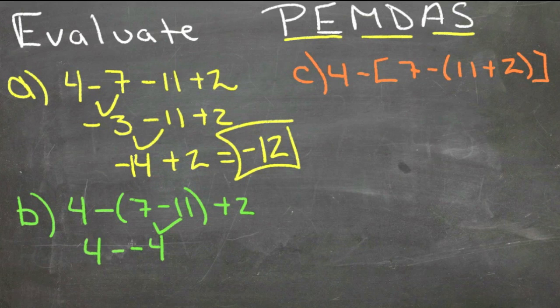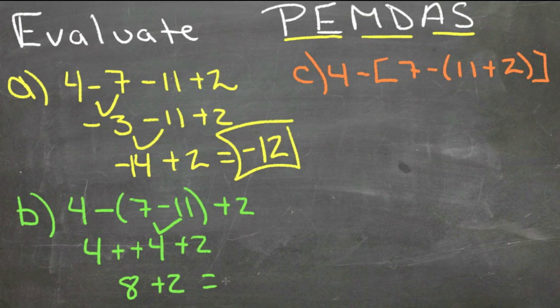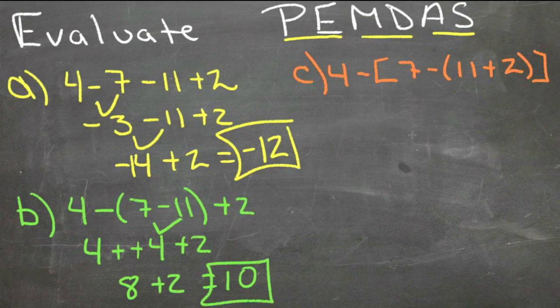So we have 8 plus 2, and 8 plus 2 equals 10. And then in our third example here we have two sets of parentheses.